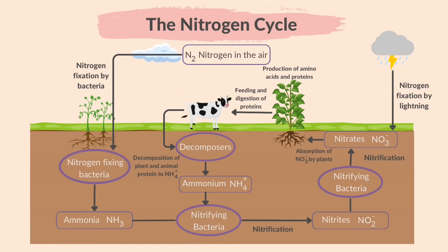Nitrifying bacteria convert the released ammonia into nitrates. Waste products from animals contain urea, ammonia and uric acid — these substances contain nitrogen. Urea is a substance excreted from organisms after a process called deamination occurs. Deamination is the process where amino groups are removed from amino acids, resulting in the production of urea.